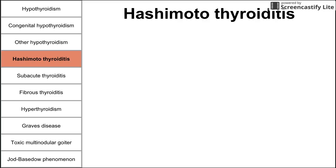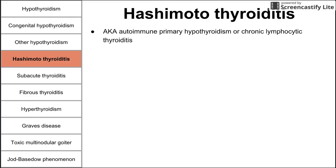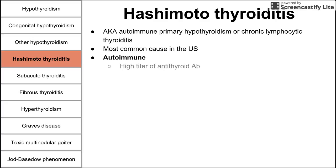The first thyroiditis we'll discuss is Hashimoto's thyroiditis — the most common cause of hypothyroidism in the U.S., where iodine deficiency is not an issue. It's also known as autoimmune primary hypothyroidism or chronic lymphocytic thyroiditis, and it is autoimmune in origin.